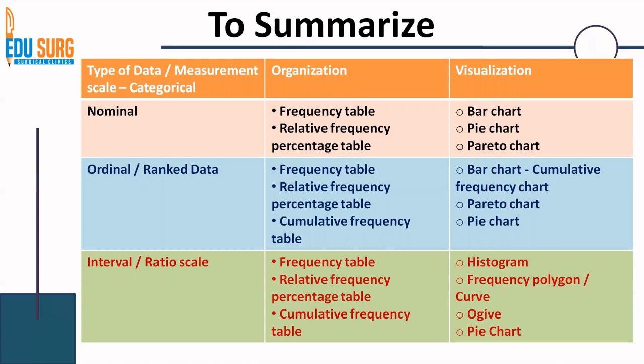The organization is more or less similar to ordinal data, that is we can use a frequency table, a relative frequency percentage table or a cumulative frequency table. And for visualization the patterns are different. We can use a histogram, a frequency polygon or a frequency curve or an Ogive which is a cumulative frequency curve or a simple pie chart. This completes the data organization and visualization part.